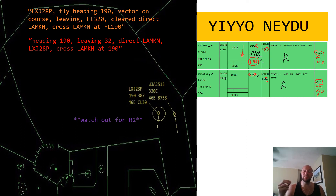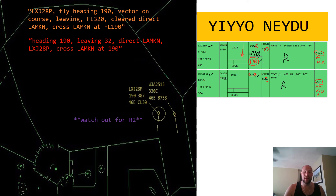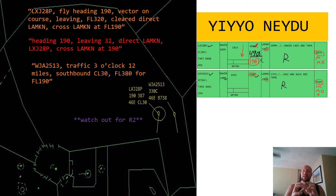Since FlexJet is leaving 390 into the 380 stratum, it would be a great idea to let WestJet know about the traffic because they are in a position to see that aircraft as they descend. 'WestJet 2513, traffic, 3 o'clock, 12 miles, southbound, Challenger 300, 380 for 190.' They'll be looking for traffic. Now everybody knows the plan, everybody's in the know, and we are seeing the light at the end of the tunnel with this scenario.